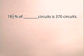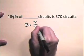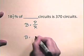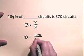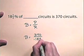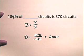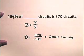Eighteen and one-half percent of how many circuits is 370 circuits? We know that base is equal to part divided by rate, and the part is 370. So the base is going to be 370 divided by 18 and one-half percent. Eighteen and one-half percent written as a decimal is 0.185, and 370 divided by 0.185 is 2,000. So 18 and one-half percent of 2,000 circuits is 370 circuits.